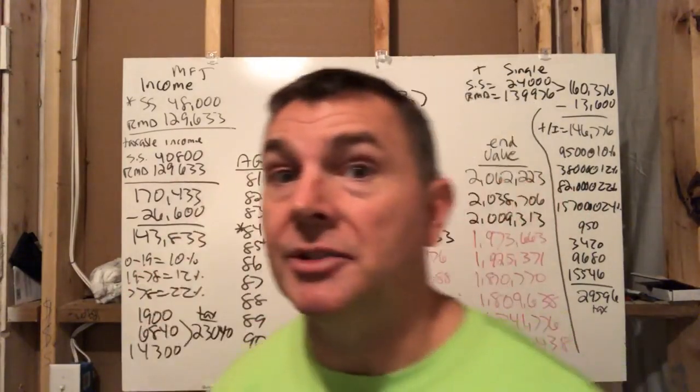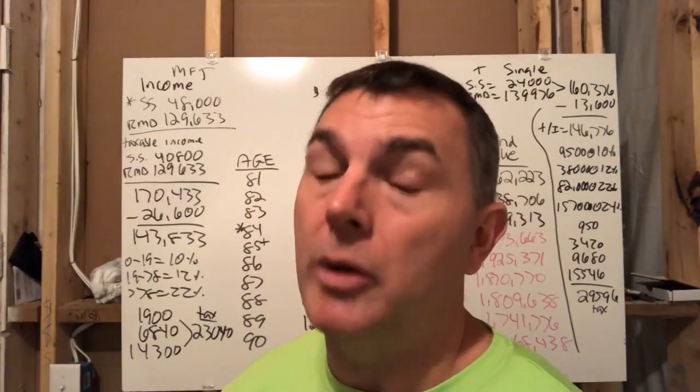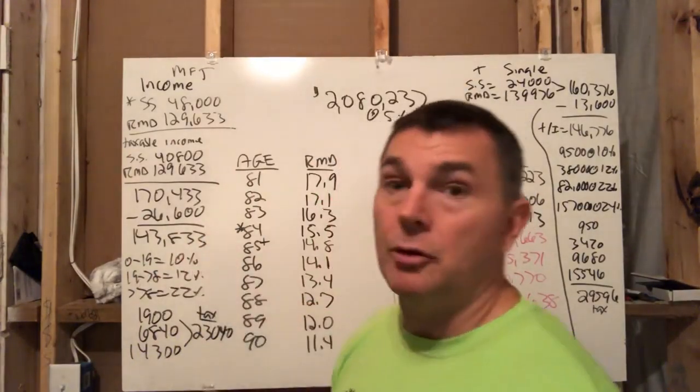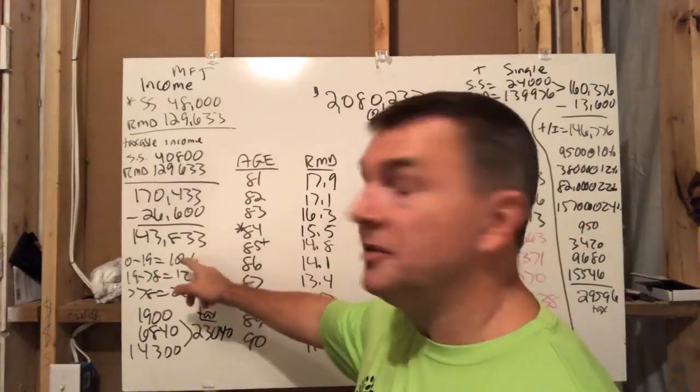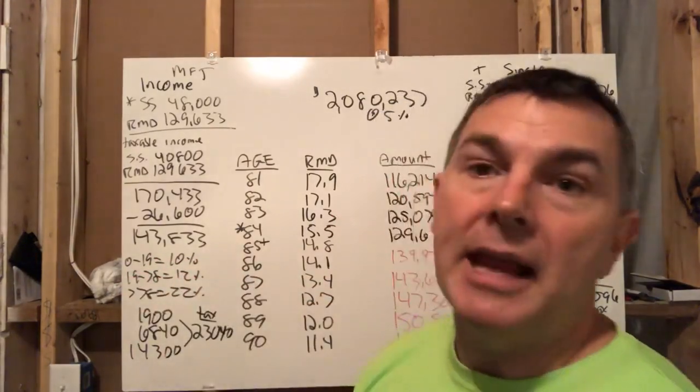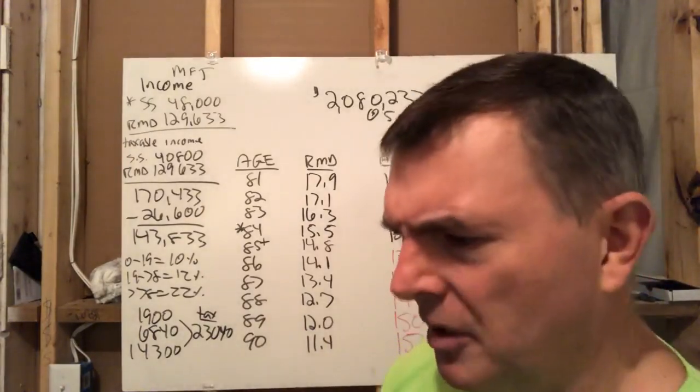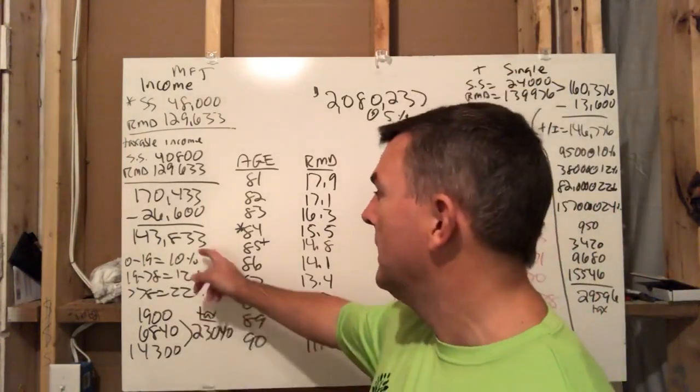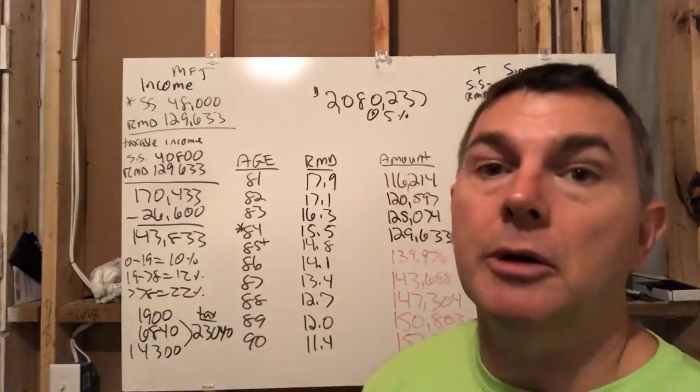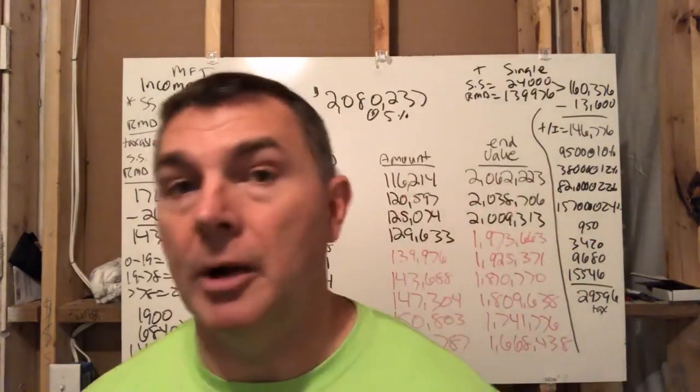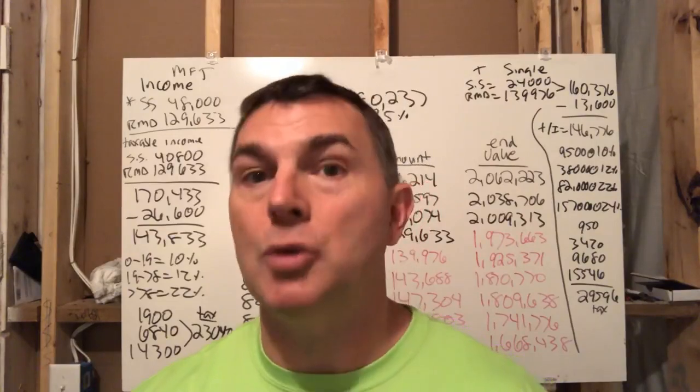Because what we're doing here is we've got to figure out first and foremost, how much of their social security be subject to taxation. I don't need to do the provisional income stuff here because I know for a fact what's going to happen. 85% of that amount will be subject to taxation. So 48,000 times 85% is 40,800 of their social security that will be added to their RMD amount to figure out what their adjusted gross income is. So we add these two numbers. Their AGI is 170,000.